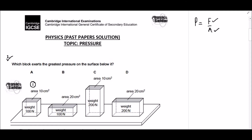Take the first block. The area is 10 centimeters squared and weight is 100 Newtons. Because we are not using any external force, the weight of the block behaves like its force. So for block one, force F1 equals 100 Newtons and area A1 equals 10 centimeters squared. Now calculate pressure: P1 equals F1 over A1, that is 100 over 10.